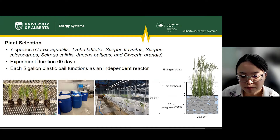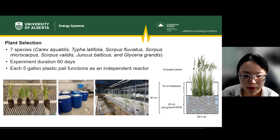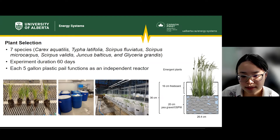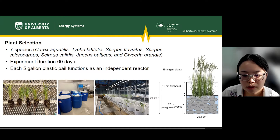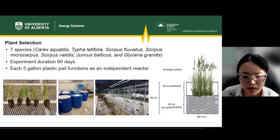Each 5-gallon plastic pail functions as an independent reactor. Plants were rooted in 20 centimeter washed pea gravel. Oil sands process-affected water was added to the gravel surface in each treatment pail.